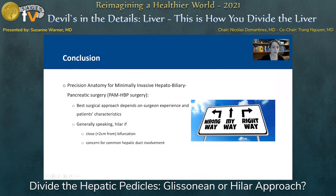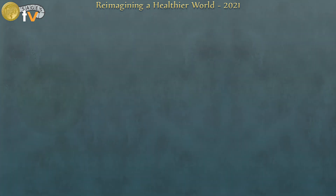In conclusion, to borrow from our precision anatomy colleagues, the best surgical approach depends on surgeon experience and patient characteristics. Generally speaking, I think it's most appropriate to use a Hilar approach if you have a tumor that's close to the bifurcation or concern for common hepatic duct involvement. But otherwise, as they say here in my new home state of Minnesota — you do you. Thanks so much for your time and attention; I appreciate the opportunity to speak.